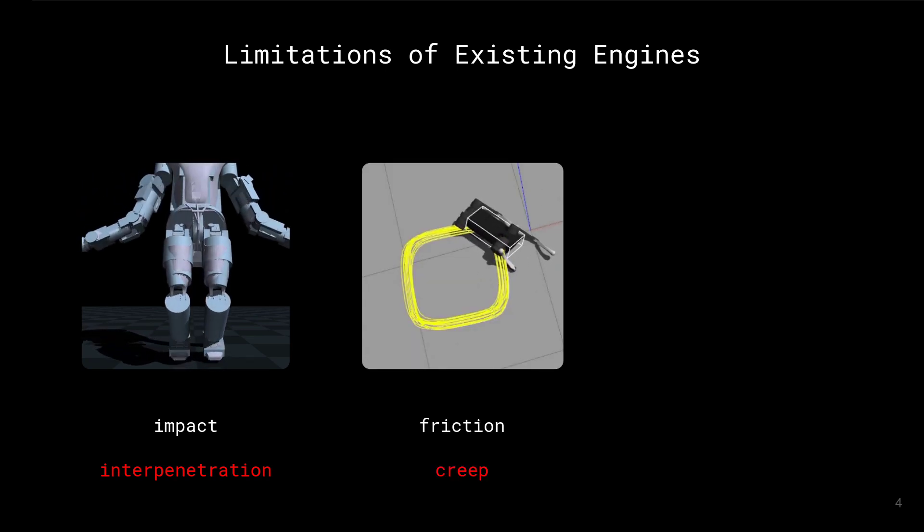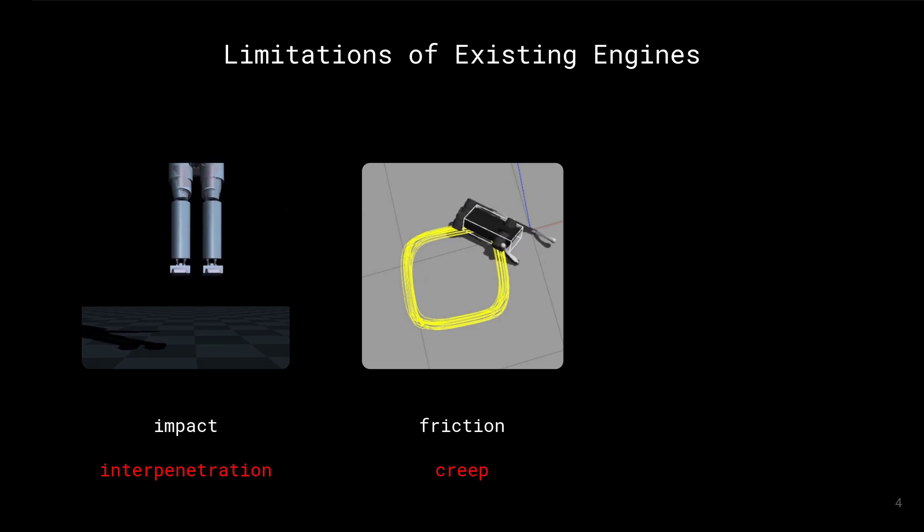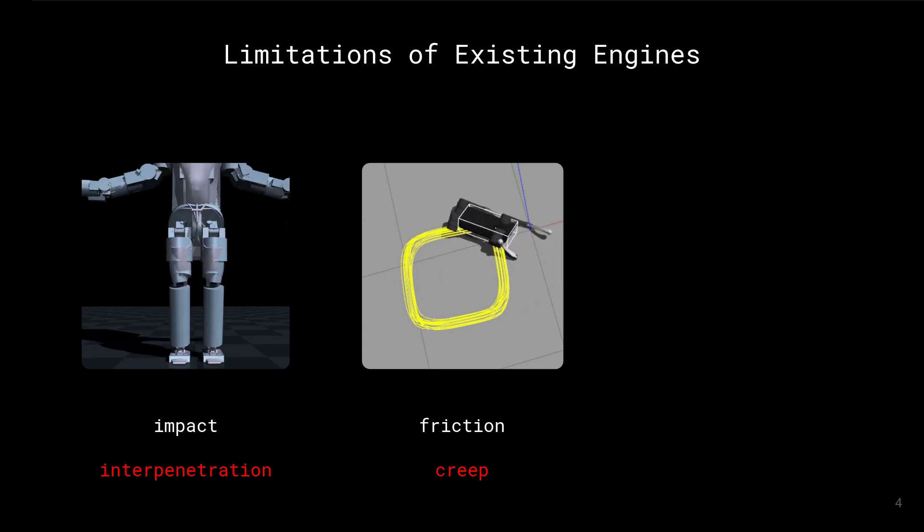Additionally, the approximated friction models can generate creep. The robot slowly slides on the floor instead of lying still.